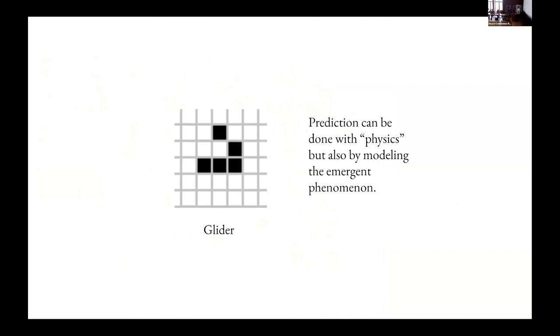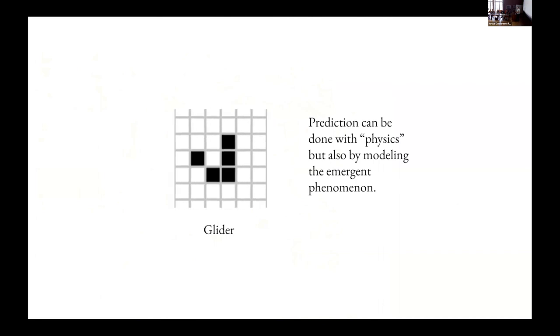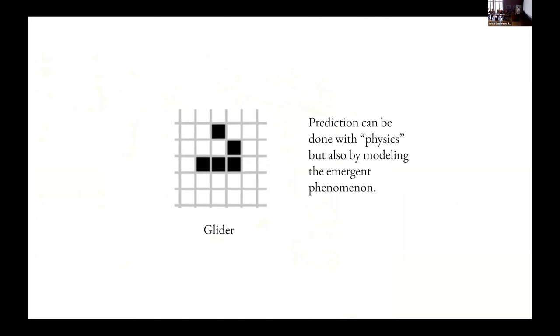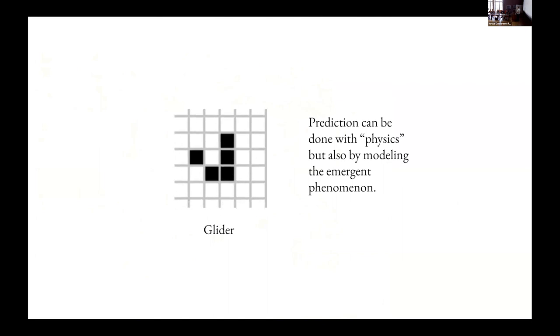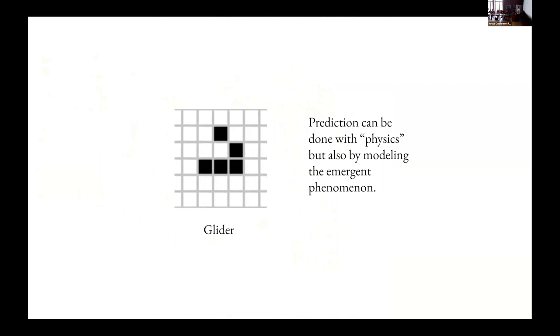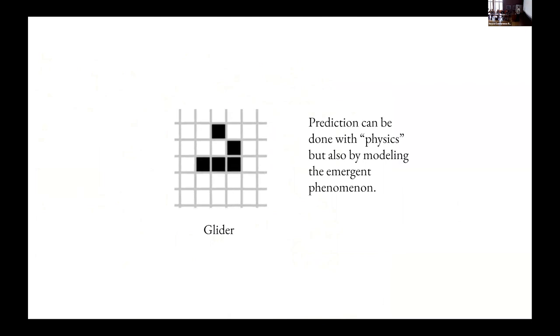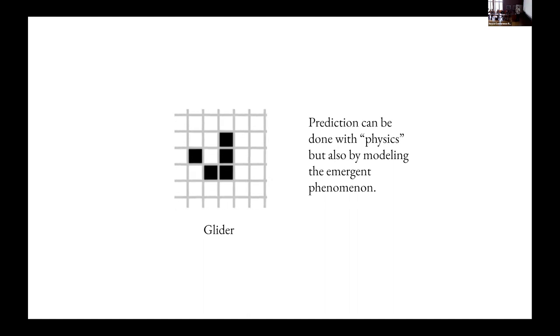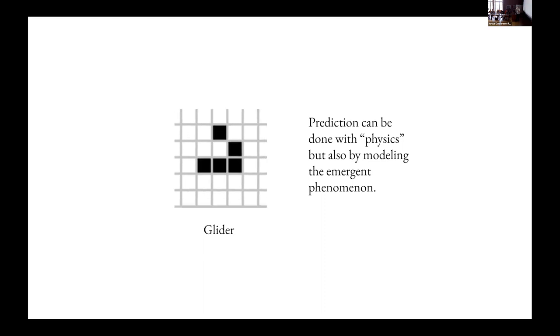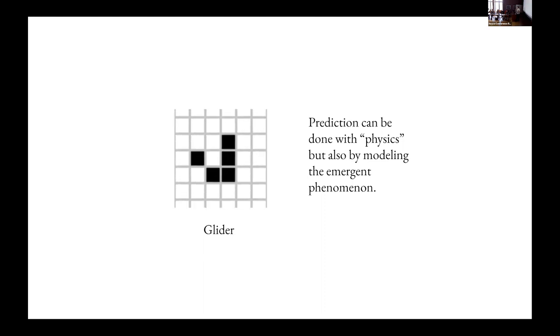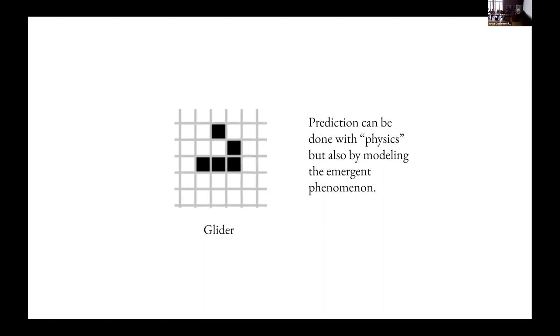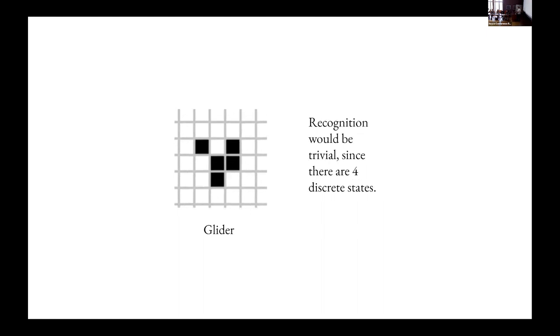Now the prediction of what the glider does, the fact that it goes through these four steps and it walks downward and to the right in this case, that's something that we understand conceptually. But the fact that this emerging phenomenon exists is not something that the physics needs in order to implement the rules of the game of life. The rules are just the physics of this universe and the physics don't care whether there exists a concept like glider or whether it moves down into the right. There are no such things in the physics of life, if you like.